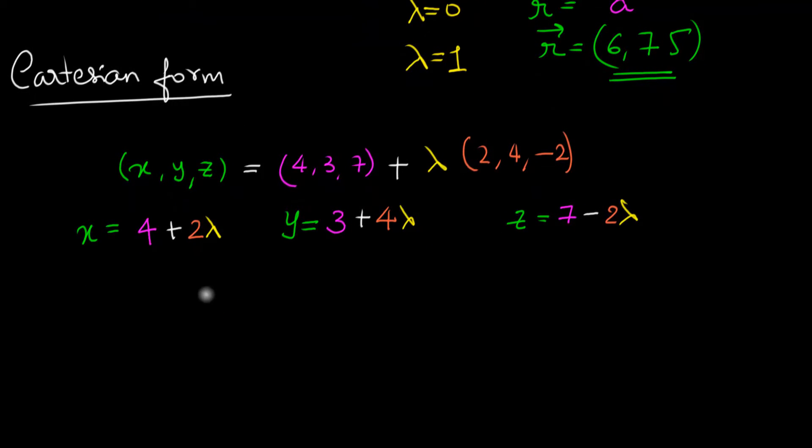Well, one way of writing the Cartesian form is like this. We're just going to say, look, my equation to the straight line is this. Any point that follows this rule is going to lie on my straight line. We can actually call this as the parametric form.